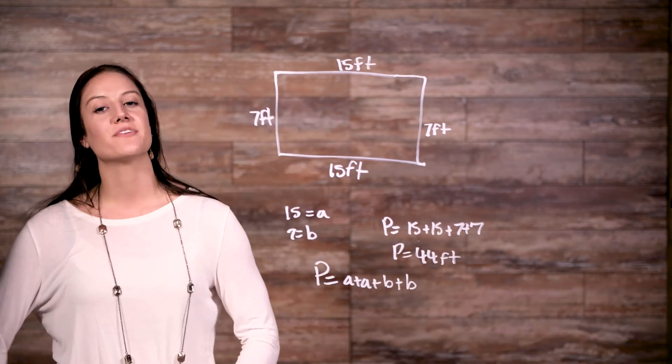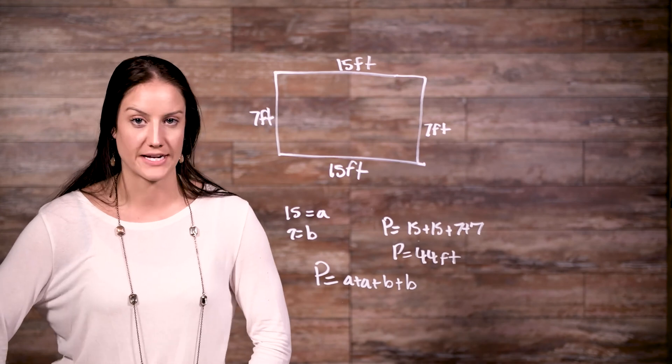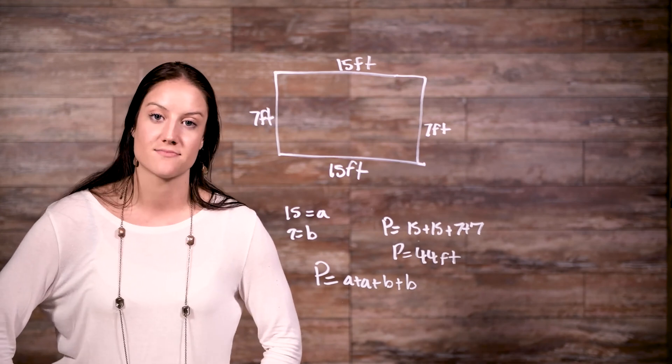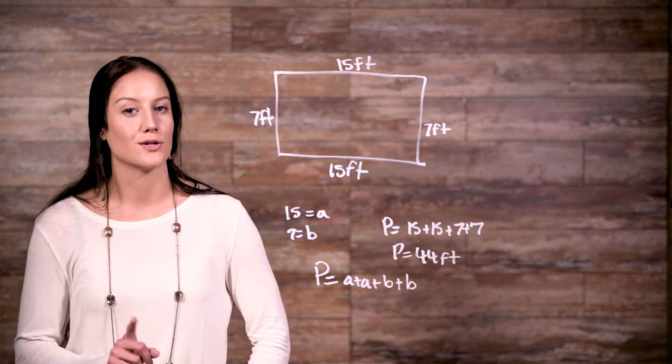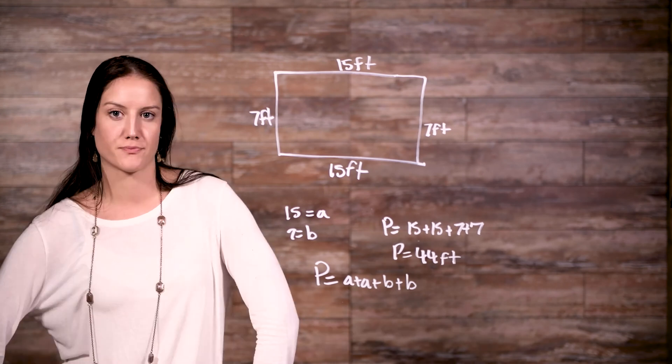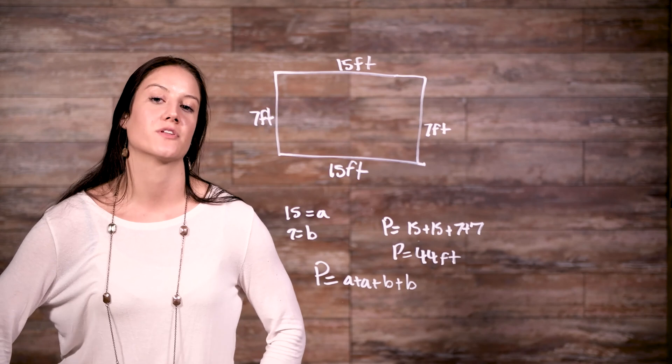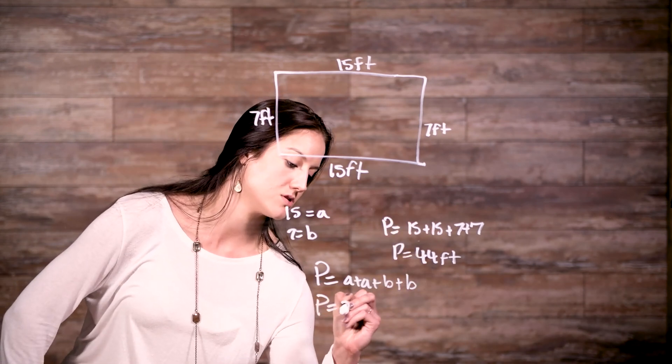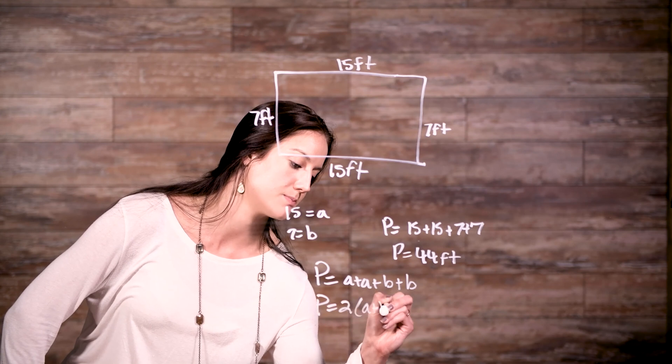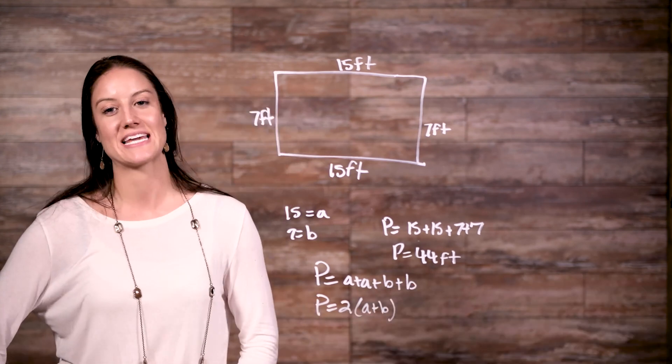We can even simplify our perimeter formula for a rectangle. Since we know that there are four sides and that there are two sets of identical sides, the two sides that are parallel to each other, we can simplify our formula for perimeter to be perimeter is equal to 2 times (a plus b). Let's try and see if we get the same thing.